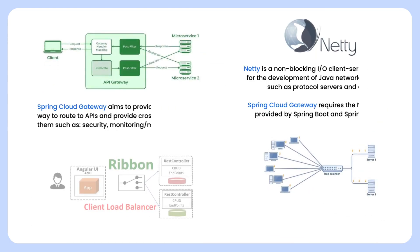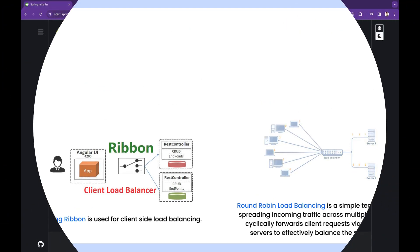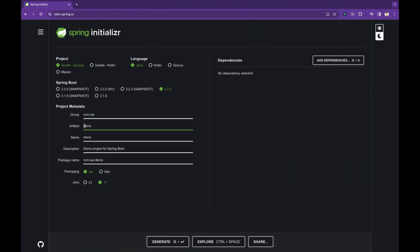We are going to make use of Spring Cloud Gateway, which internally makes use of Netty server, round-robin load balancing algorithm, and Spring Ribbon. Let's start developing our reverse proxy server.